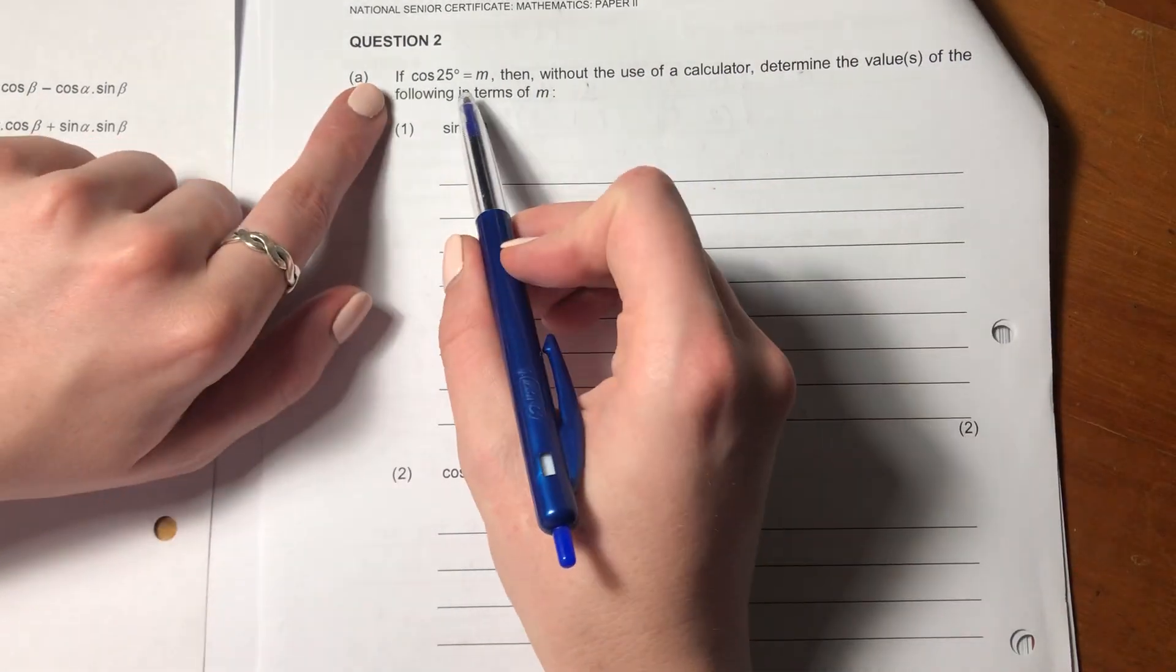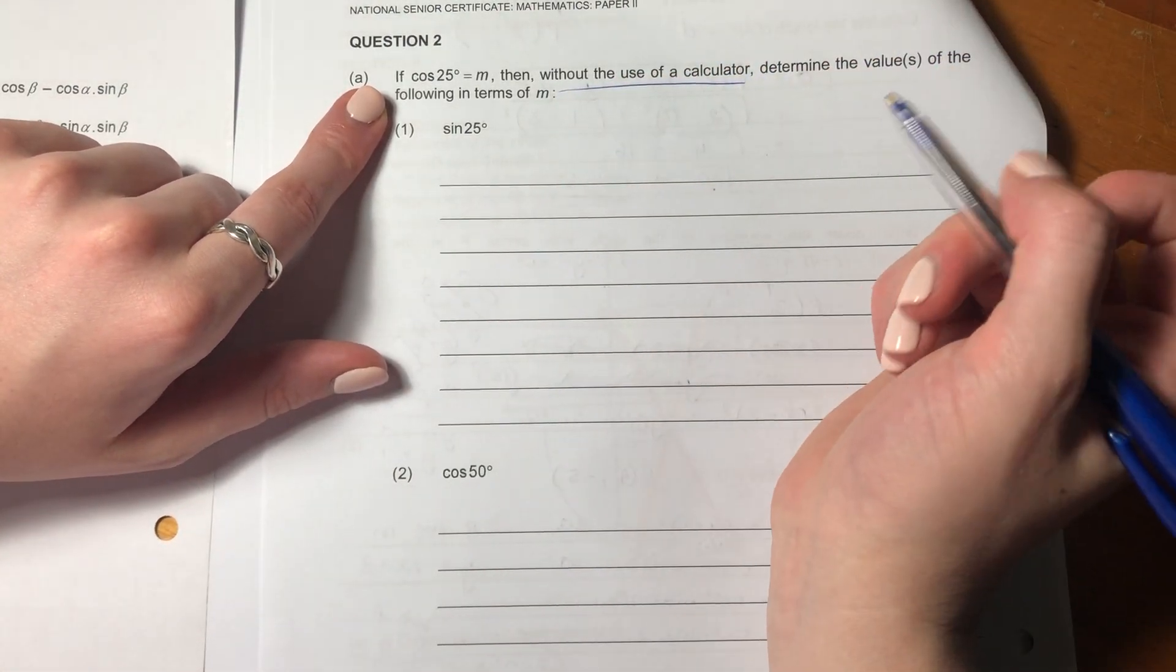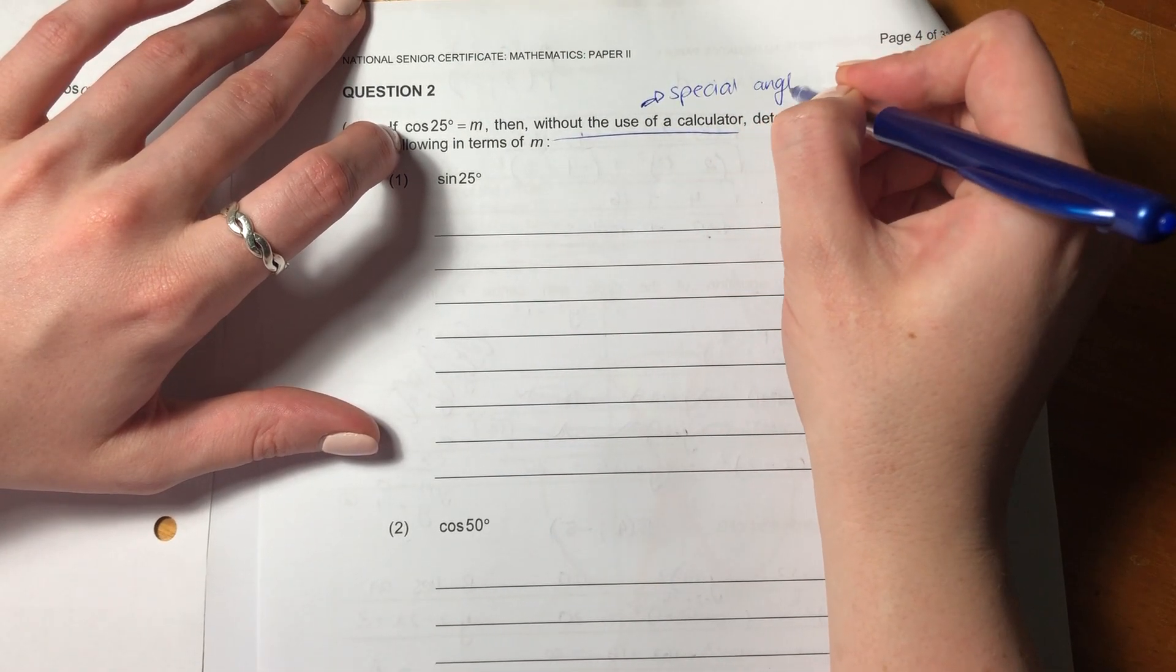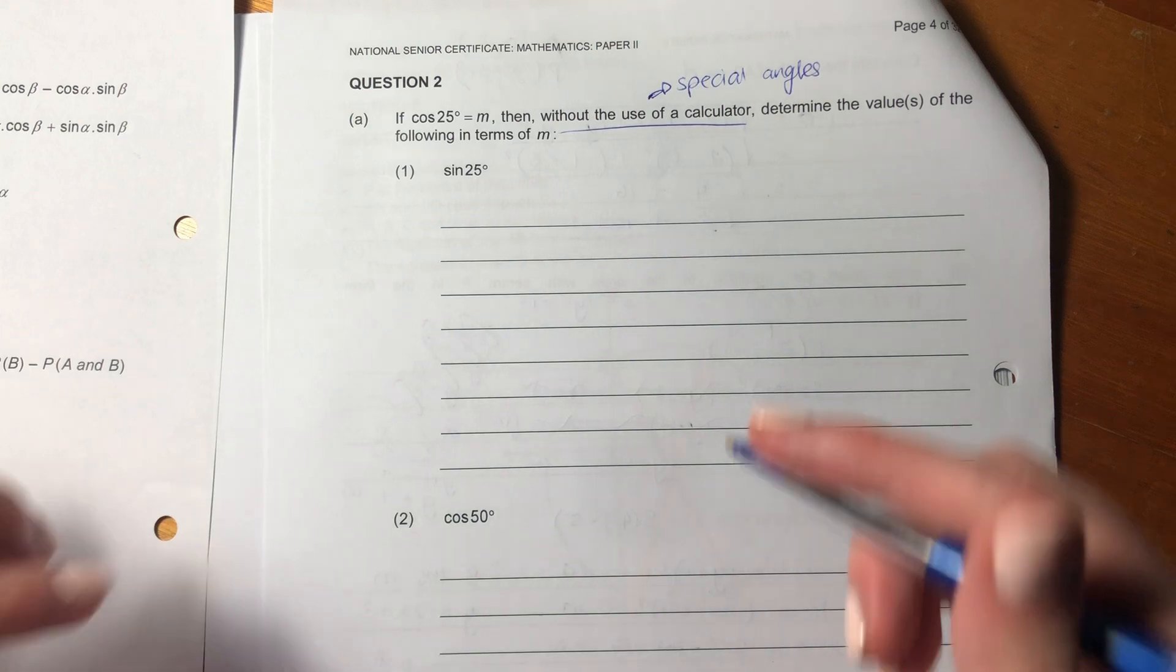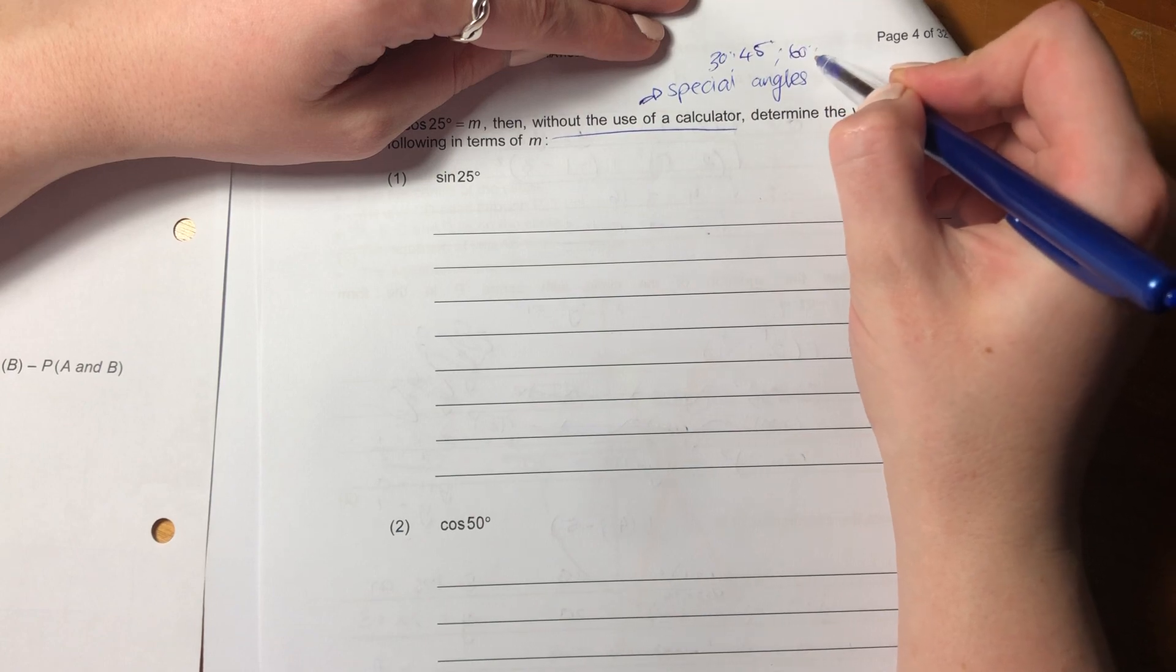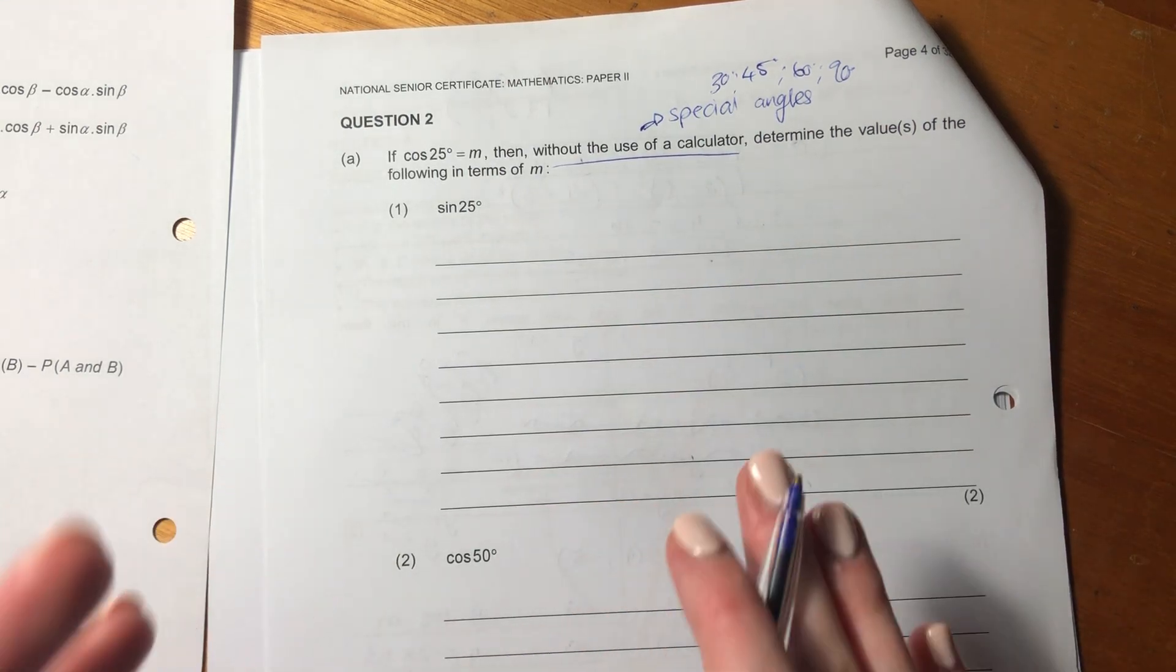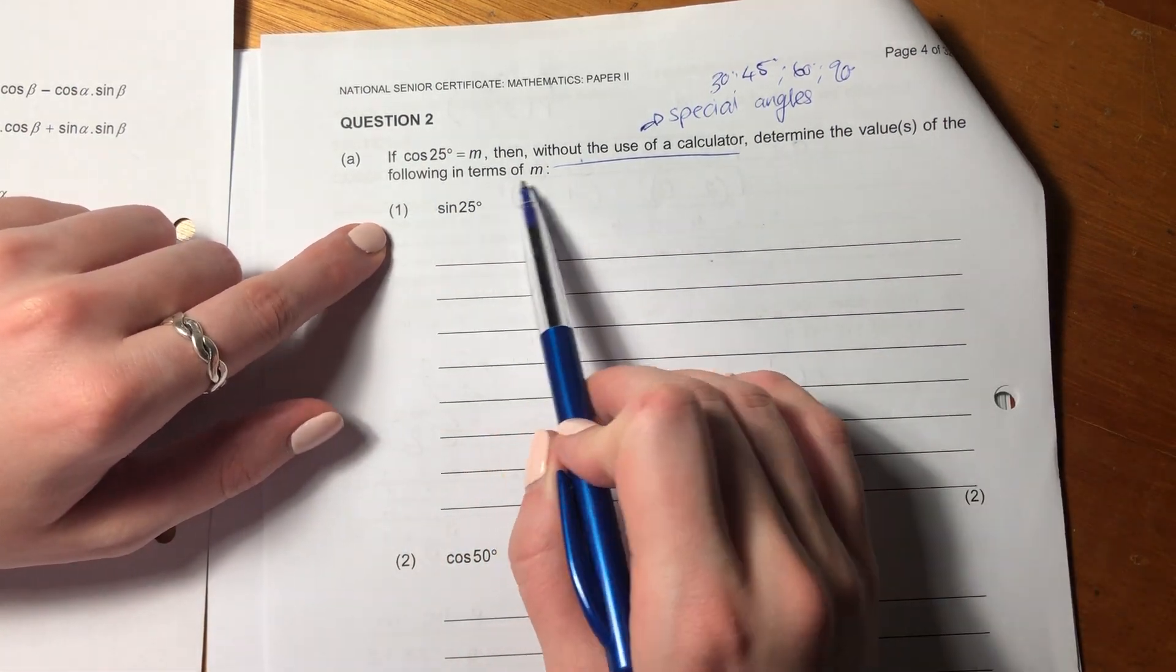So it says if cos25 equals m, then without the use of a calculator, that's important. When you see without the use of a calculator, you should be thinking special angles, because they accept that you know the different dimensions of a special angle triangle. Our special angles are 30, 45, 60, and 90. So if we leverage questions that have any trig function of those various angles, then we can put in our calculator and it comes across as if we haven't used our calculator. Then it says determine the values of the following in terms of m.